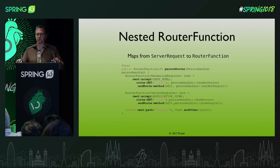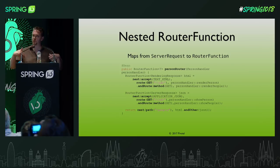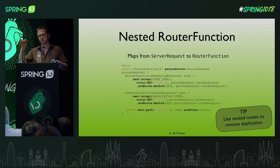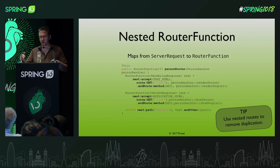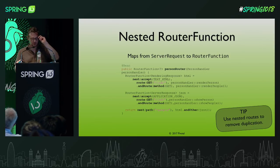The first way to improve this would be to use nested router functions. A nested router function is a router function that doesn't map to a handler function, but maps to another router function — so it's an extra level of indirection. With nesting, you can basically remove duplication. There was a lot of duplication in the example earlier — the path was duplicated multiple times, the text/HTML constant was copied multiple times. Duplication should make you feel bad — don't repeat yourself. You can get rid of that by using nested routes.